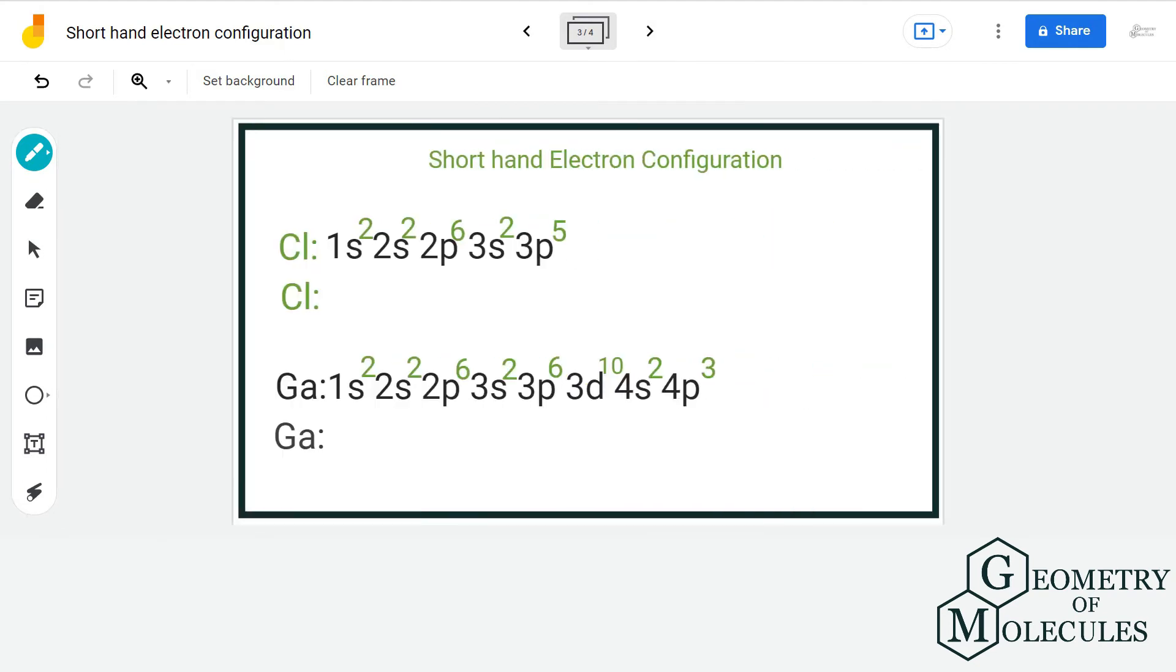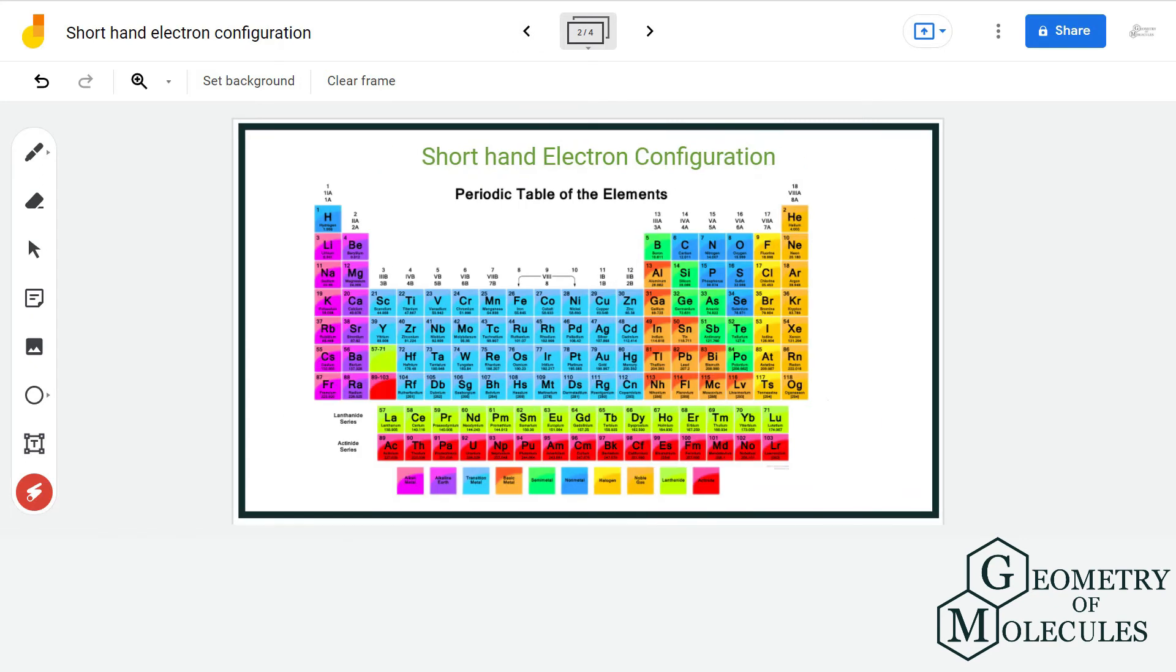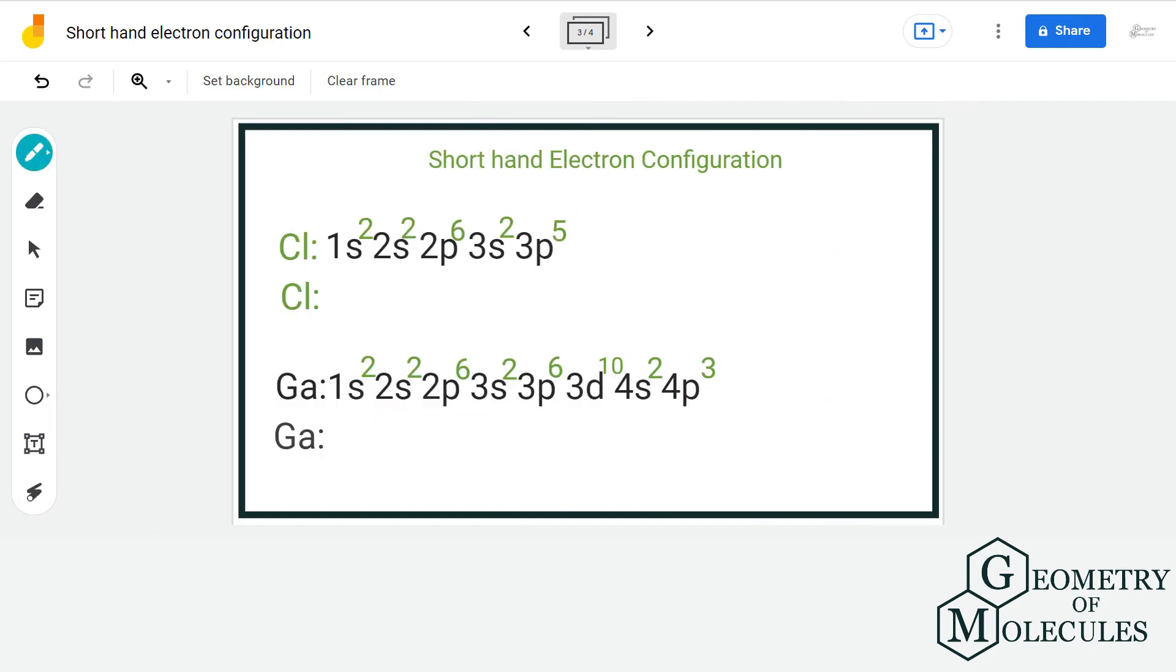Let us see some more examples. We have to write shorthand electronic configuration of chlorine. So, let us look at the position of chlorine in the periodic table. The noble gas before chlorine is neon that has 10 electrons. Up to 2p6, it is the electronic configuration of neon. So, the final electronic configuration is neon in bracket 3s2 3p5.